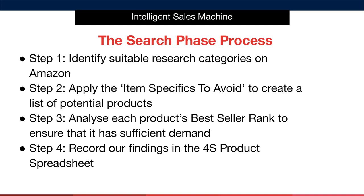The search process has four overarching steps that you'll repeat over and over again. First, we begin with identifying suitable research categories on Amazon. There are only a handful of main categories that we're going to use in this process, and I'll give you the key categories to research and tell you the ones that you must avoid.